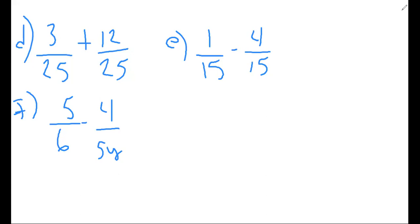I want you to try Model D — three over 25 plus 12 over 25 — add that and reduce it. I'd like you to send me D and E as an inbox message for extra credit toward your midterm. I'll have more for you at the end of the video. Make sure you submit those before I discuss them — if you submit after I discuss them, they will not count for bonus. Now I plan to work Model F: five over six minus four over five-Y. The level of difficulty is mainly with the variable Y, but let's discuss that.